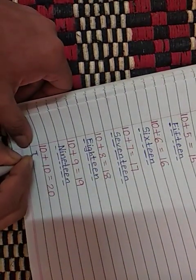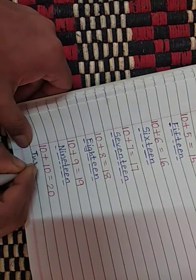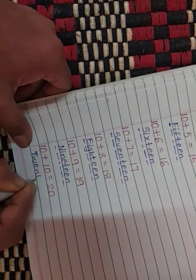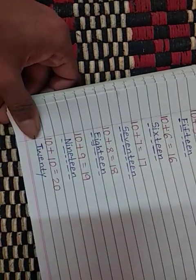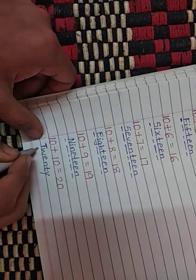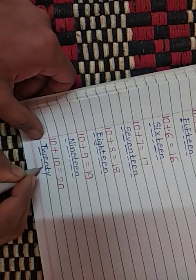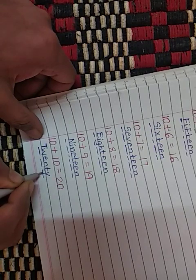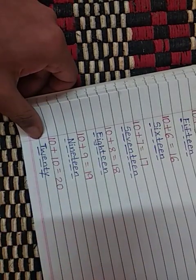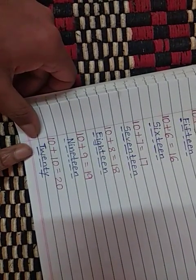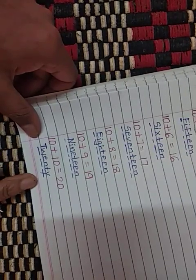Which we will be writing here. The number name T-W-E-N-T-Y, 20. See now: T-W-E-N-T-Y, 20.